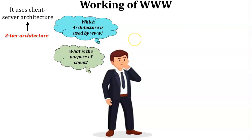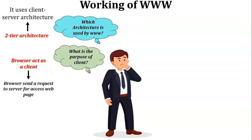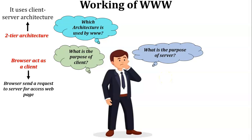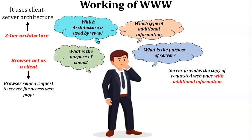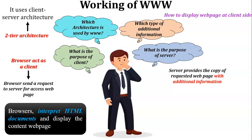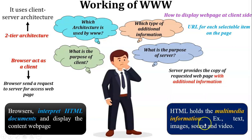In client-server architecture, the browser acts as the client. Using the browser, the user can send a request to the web server to access a web page. The server receives the request from the client, finds the requested web page, and provides a copy of it with additional information. There are two types of additional information added by the server: first, how to display the web page at the client side — the browser accepts the web page, interprets the HTML document, and displays the content. Second, the URL for each selectable item on the page. HTML holds multimedia information on the web page.